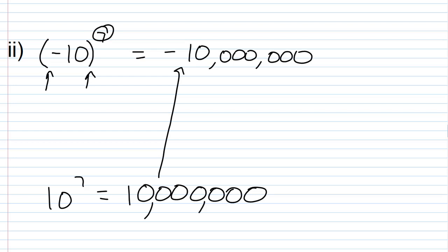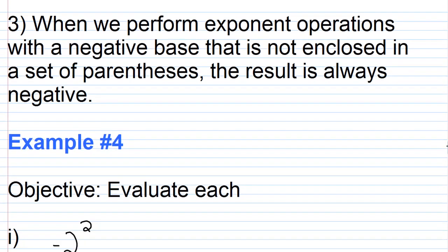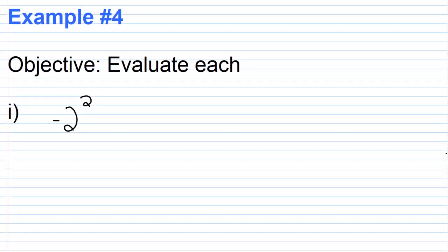Now let's discuss the more difficult scenario: when we perform exponent operations with a negative base that is not enclosed in parentheses. In this case, the result is always negative — it doesn't matter whether the exponent is odd or even. Let's work through an example and explain why.